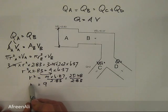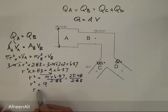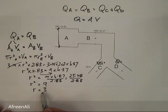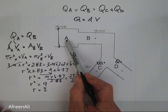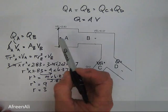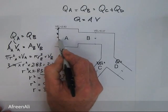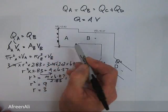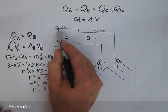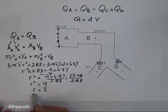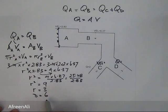So if R squared equals 9, then R equals 3. R was the radius at A, so if the radius is 3, then the diameter at A equals 6.